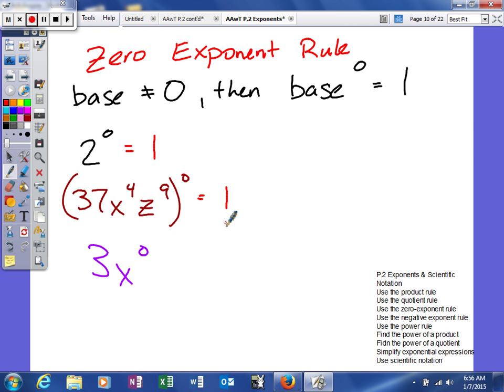Now, here's a tricky one. The bottom one, as you can see, we have three x to the zero power. Well, we do have an exponent of zero, but the base of the exponent is actually x.